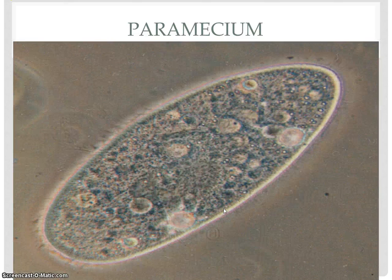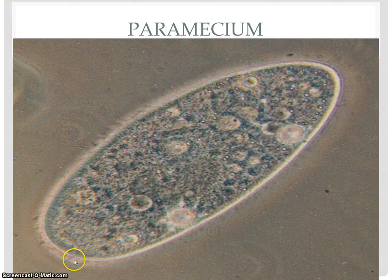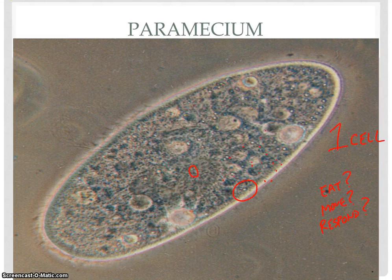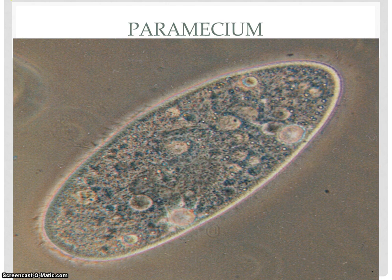Another single-celled organism: a paramecium. We can see it's elongated and has a lot of structures inside — darkened spots, small balloon-like structures. And even on the outside, if we look really closely, it looks almost like this organism is covered in fine little hairs. Those are called cilia. What do you think those might do? This organism lives in an aquatic environment — what might those cilia help it do? And how does this organism get food and respond to its environment?